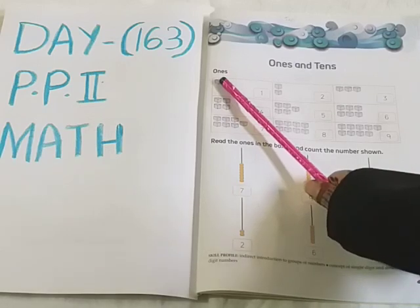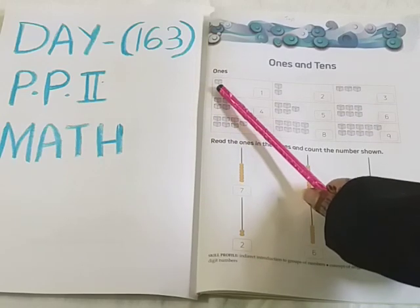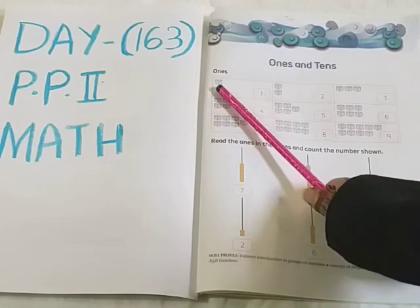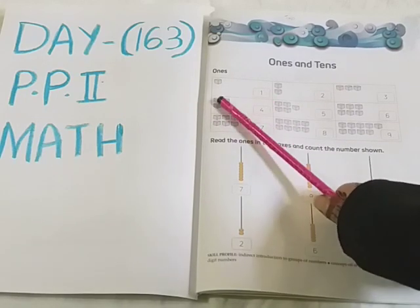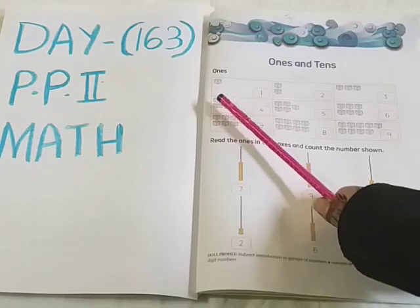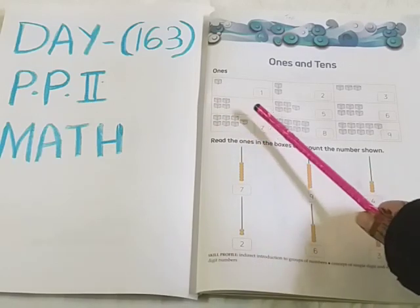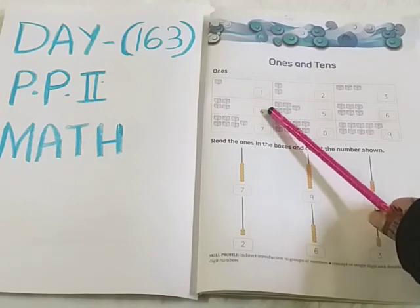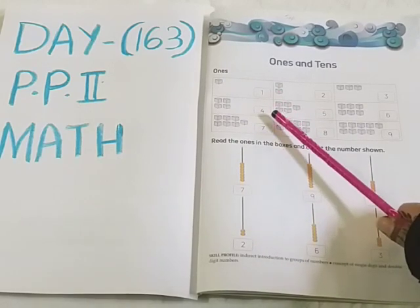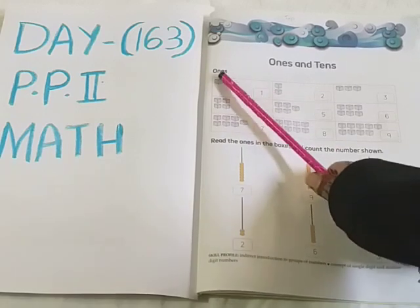Let's see for which numbers we will call as Ones. Here you can see only one box is there, so this number 1 will come under Ones. Here there are 4 blocks — a single digit number, only if one number is there, so this number will come under Ones.